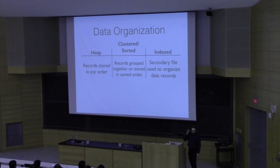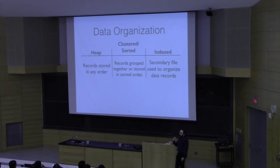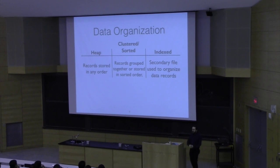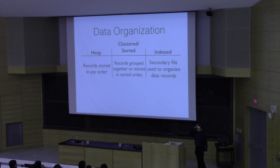When you organize the data, there are three really basic high-level strategies. The first is to simply not try to organize it — take your records, store them in whatever order they happen to fall in, just have this big long file of records. This is typically referred to as a heap, not to be confused with a heap data structure.